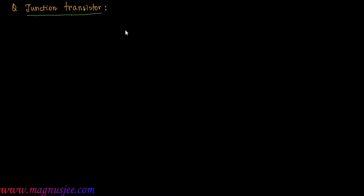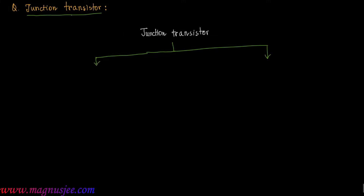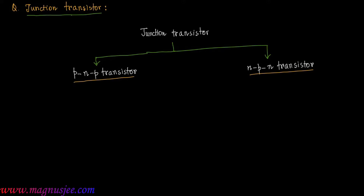Junction Transistor. There are two types of junction transistor: PNP transistor and NPN transistor.